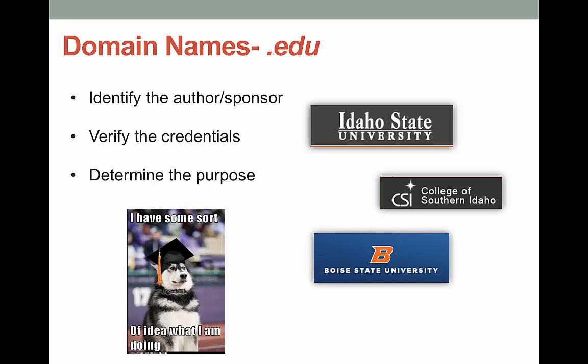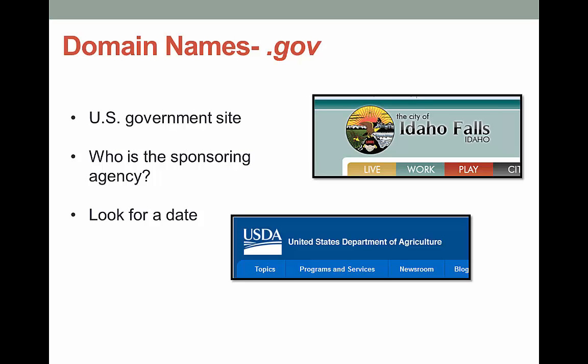A .edu site is for higher education institutions — colleges and universities. The information contained on a .edu site tends to be better than a .com, but you still need to think critically when looking at the information. Just like with the .com, you need to identify the author, verify the credentials, and examine the purpose.